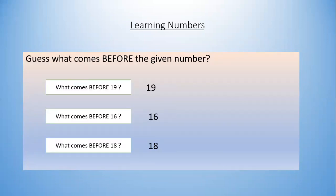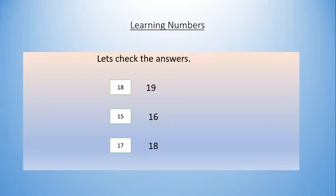Now guess what comes before the given number. Try to guess what comes before 19, what comes before 16, and what comes before 18. Let's check the answer. Yes, you are right. The number which comes before 19 is 18, the number which comes before 16 is 15, and the number which comes before 18 is 17. You did it.